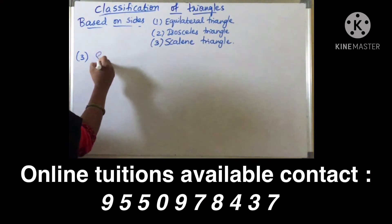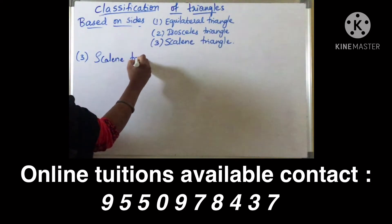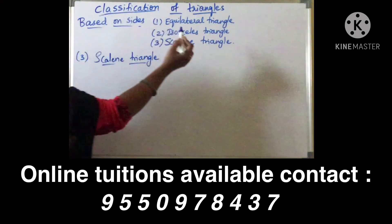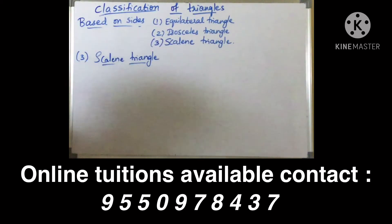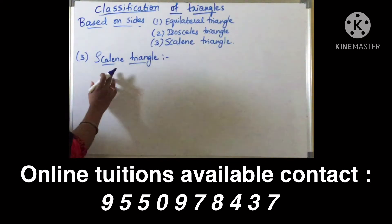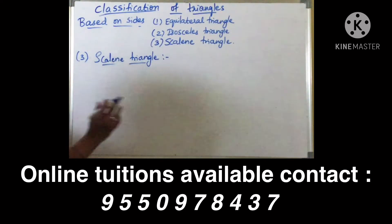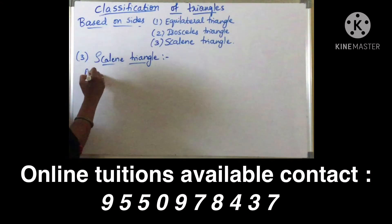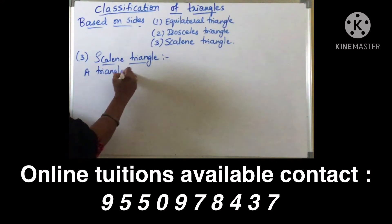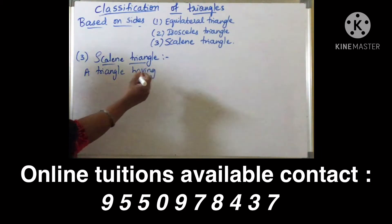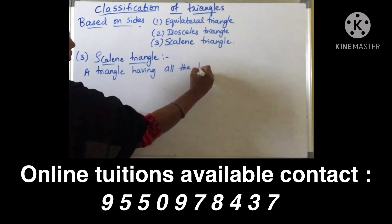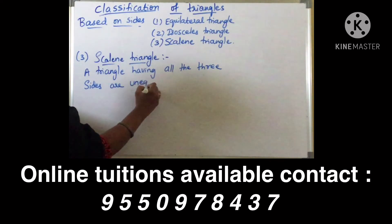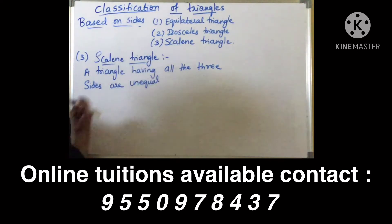Next, the third one is a scalene triangle. A triangle in which three sides are equal is equilateral. A triangle in which two sides are equal is isosceles. Coming to scalene triangle: a triangle in which no sides are equal — meaning all three sides are of unequal length. So coming to the definition: a triangle having all three sides of unequal length.